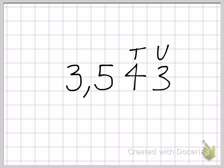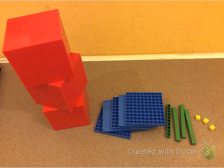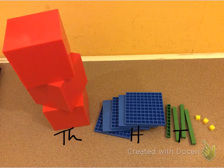We have units, tens, hundreds, and then individual thousands. We can show this using cubes. 3543 is here. We've got thousands, hundreds, tens, units.